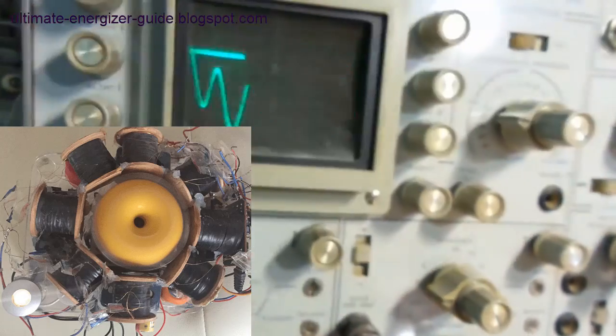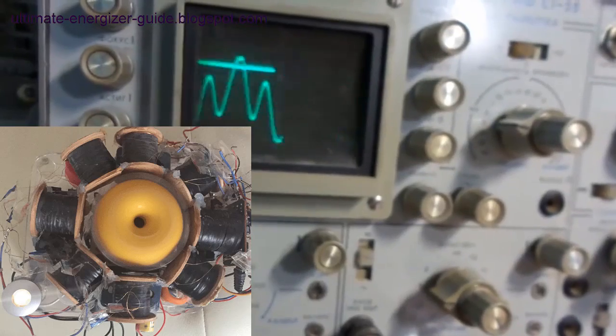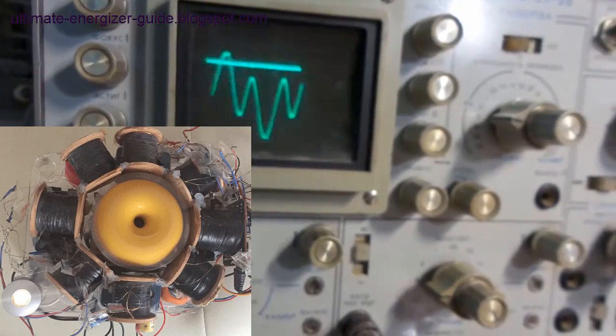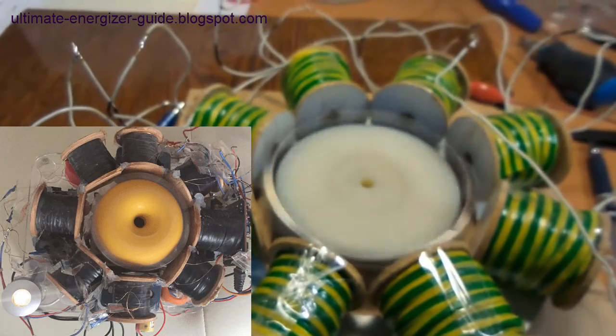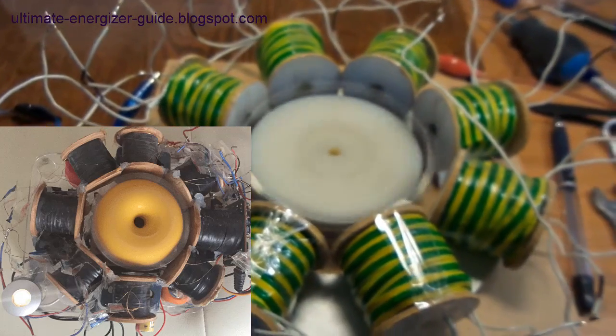When a magnet rotates on the rotor axis, the induction coil on the stator generates a reverse voltage, creating a force that opposes the magnet's rotation. This force, fundamentally, is generated by the back-EMF of the AC generator.